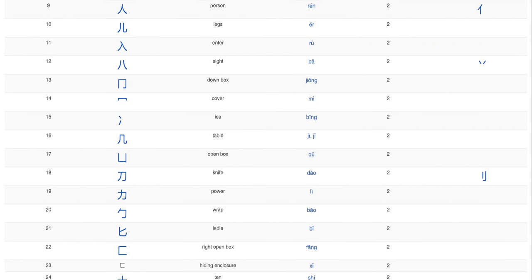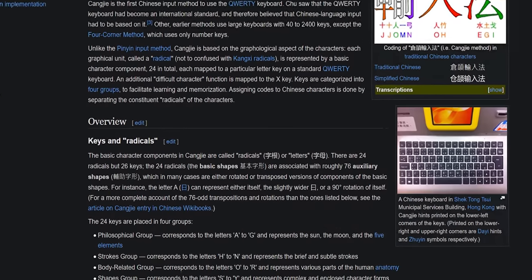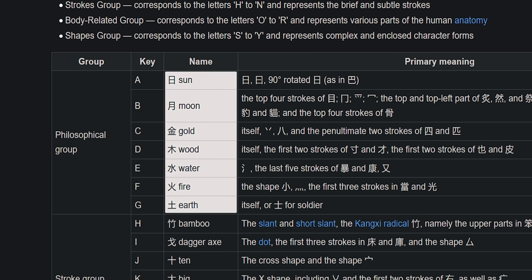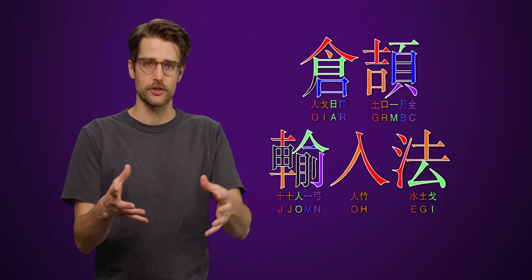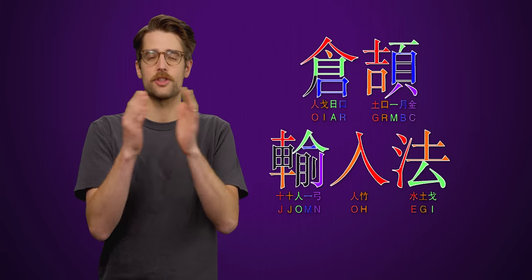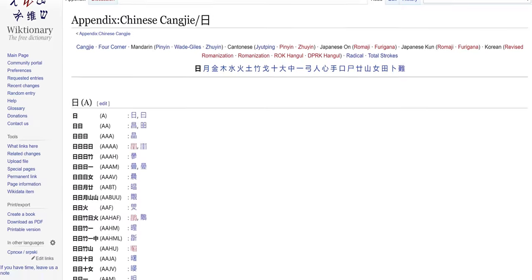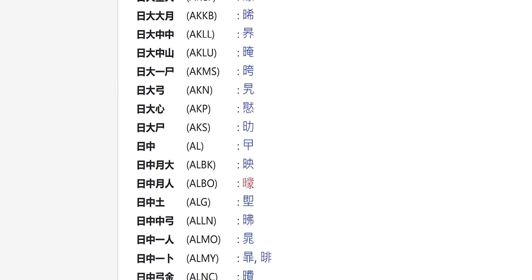Chinese characters aren't just constructed at random. Rather, they're often made up of elements sometimes referred to as radicals. On a Cangjie keyboard, each Latin character matches up to a common radical, sorted according to the order of the Latin alphabet. For example, the keys for A through G roughly correspond to classical elements of nature, such as water or fire. Once you've decided which character you want to type, you build them up from these radicals, going from top of the character to the bottom, left to right, and outside to inside, meaning you can construct a large number of characters from three or four key sequences called Cangjie codes.